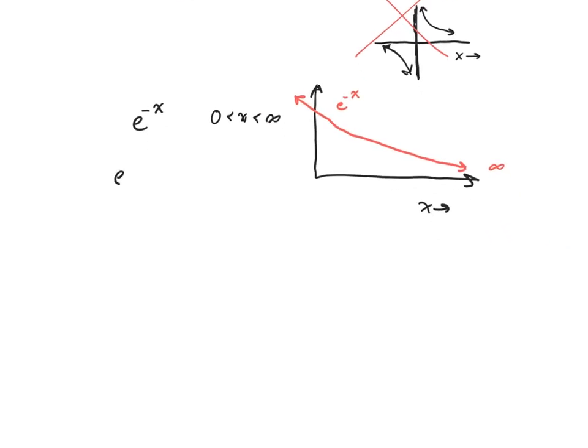The final criteria is to determine whether it's square integrable. So to do that, I'm going to square the function. E to the negative x squared just happens to be e to the negative 2x, and that's because when you raise an exponent to another power, you just multiply the exponents. And then I'm going to integrate over this range from zero to infinity, e to the negative 2x dx.